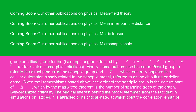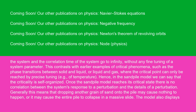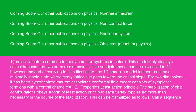Self-organized criticality: the original interest behind the model stems from the fact that in simulations on lattices, it is attracted to its critical state at which point the correlation length of the system and the correlation time of the system go to infinity without any fine tuning of a system parameter. This contrasts with earlier examples of critical phenomena, such as the phase transitions between solid and liquid or liquid and gas, where the critical point can only be reached by precise tuning, e.g., of temperature. Hence, in the sandpile model, we can say that the criticality is self-organized. Once the sandpile model reaches its critical state, there is no correlation between the system's response to a perturbation and the details of the perturbation. Generally, this means that dropping another grain of sand onto the pile may cause nothing to happen, or it may cause the entire pile to collapse in a massive slide. The model also displays 1/f noise, a feature common to many complex systems in nature.